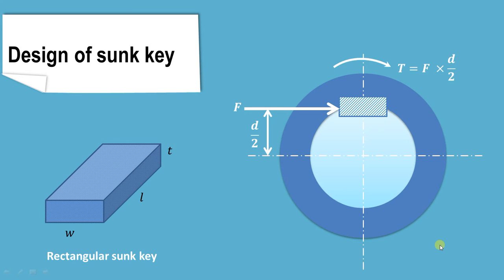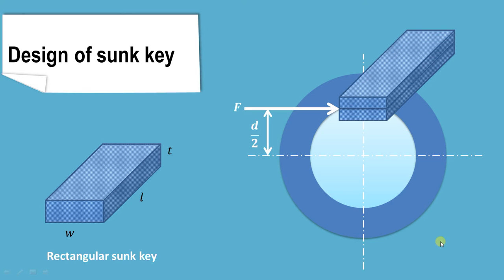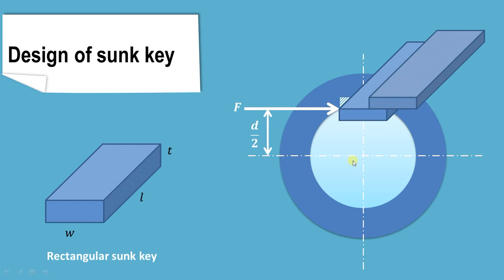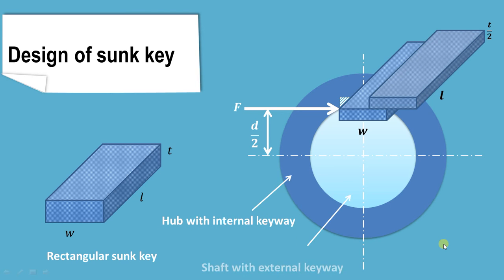For simplicity, we have converted this key into three-dimensional form — half of the key is shown in the shaft and half in the hub. Because of this tangential force there will be shear, and the area resisting the shear is width into length, so W into L is the area resisting shear.